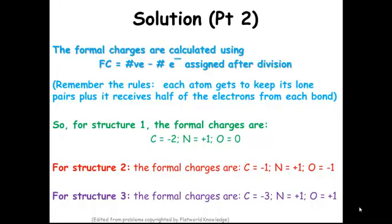So remember, to calculate formal charge, we're going to take the number of valence electrons minus the number of electrons assigned after we divide them. Each atom gets to keep its lone pairs, plus it receives half of the electrons from each bond. So a single bond, a given atom would get one electron, and a double bond, a given atom would get two electrons.